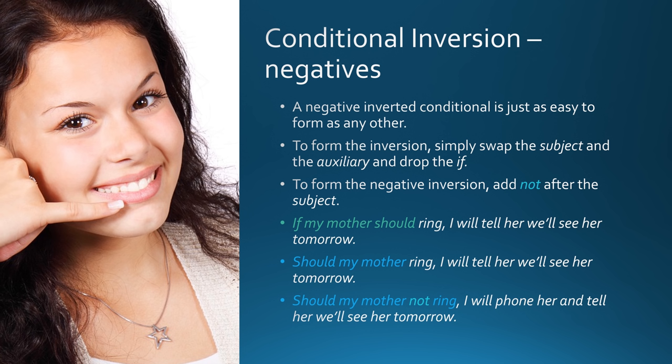Conditional inversion — negatives. A negative inverted conditional is just as easy to form: simply swap the subject and auxiliary and drop the 'if,' then add 'not' after the subject. 'If my mother should ring, I will tell her we will see her tomorrow' — 'Should my mother ring, I will tell her we will see her tomorrow.' Negative: 'Should my mother not ring, I will phone her and tell her we will see her tomorrow.'